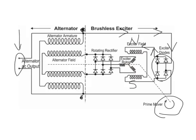Current flows through our exciter diodes, creating a bigger north and south pole which gives us our lines of force. As the prime mover turns the exciter rotor through those magnetic lines of force, an AC voltage is induced onto the exciter rotor. That AC voltage — essentially an electrical pressure — causes AC current to flow out to our rotating rectifier. The rotating rectifier is physically part of the machine, built right on the rotor itself — there are no brushes whatsoever. That AC current is rectified by a three-phase full-wave rectifier, providing a relatively clean DC output.